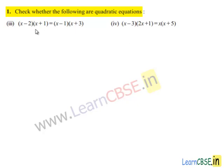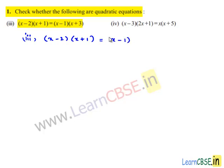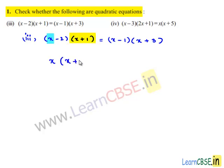Now coming to the third bit, which is (x minus 2)(x plus 1) equals (x minus 1)(x plus 3). On the left hand side we have (x minus 2)(x plus 1), which can be written as x multiplied by (x plus 1) minus 2 multiplied by (x plus 1).